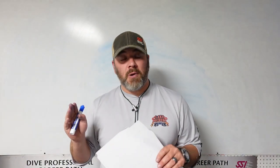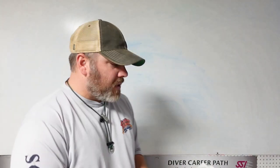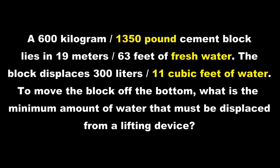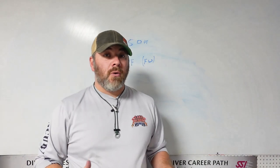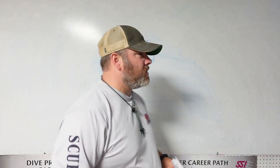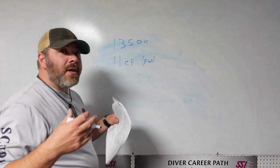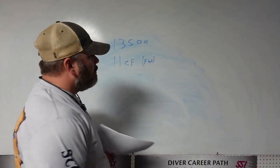Now that question has a ton of information in it. What we're going to do is break the question down and just pick out the information that we need to answer it — looking at this in both the imperial and the metric system. So taking a close look, we see that the object weighs 1,350 pounds. We also see that the object displaces 11 cubic feet of fresh water. It's important to note that fresh water is a determining factor because fresh water and salt water have two different weight calculations, so I'm going to write fresh water down as well.